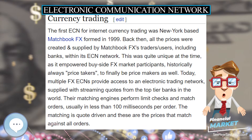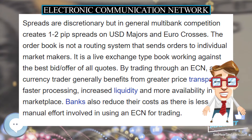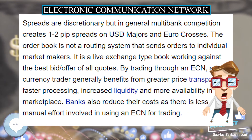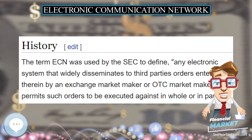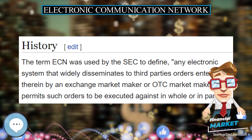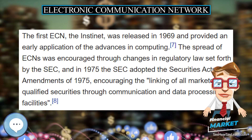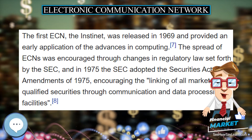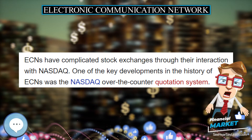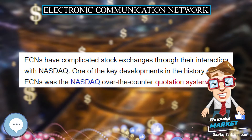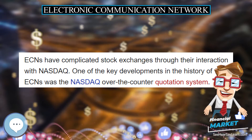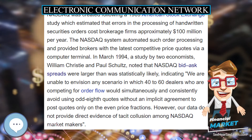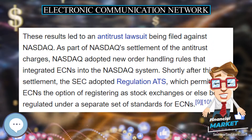ECN fee structures can be grouped into two basic structures: a classic structure and a credit or rebate structure. Both fee structures offer advantages of their own. The classic structure tends to attract liquidity removers, while the credit structure appeals to liquidity providers. However, since both removers and providers of liquidity are necessary to create a market, ECNs must choose their fee structures carefully.